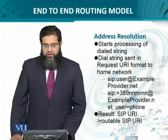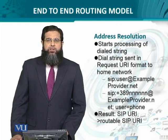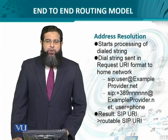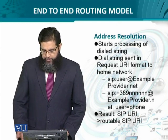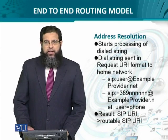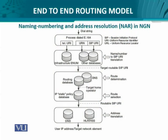So what is the result of this translation? This translation or resolution results in a routable SIP URI that is now ready to be sent into the network for delivering data in any form to the destination. The address resolution starts with the dialed string. The dialing process is used to translate E.164 either into a telephone URI or into a SIP URI. Depending upon which URI is used, either infrastructure ENUM or other SIP databases are referred to. After that, a routable SIP URI is extracted by appending the domain name, and then the route determination takes place.